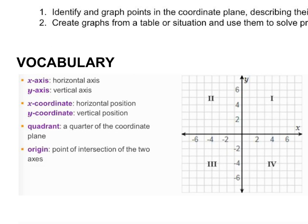You have x-coordinates and y-coordinates. The x-coordinate is your position along the x-axis, and the y-coordinate is your position along the y-axis. When you combine both of these coordinates together, you get a point — these coordinates create points.